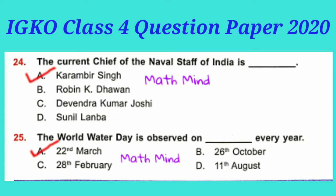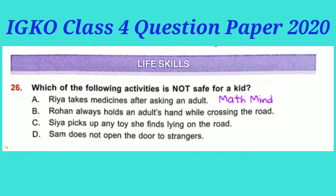Option C, 28 February, is National Science Day in India. Life Skills. Question No. 26: Which of the following activities is not safe for a kid? Option C is correct: Sia picks up any toy she finds lying on the road. This is not safe for a kid.